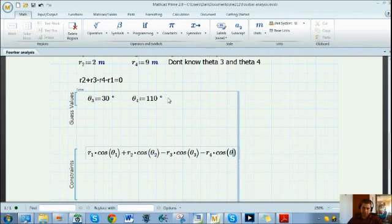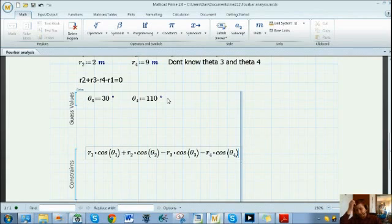Now we want to set that equal to zero, but we don't want to use the normal equal sign. You press Ctrl+equals and this makes a bold equal sign setting a relationship. So far the only real use I've found for that is in solve blocks.